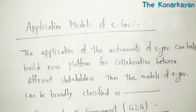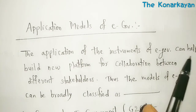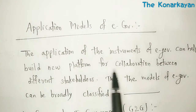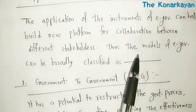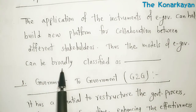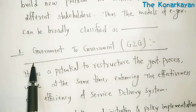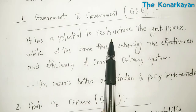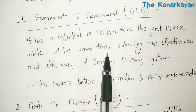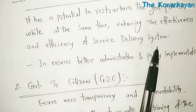The applications of the instruments of e-governance can help build new platforms for collaboration between different stakeholders. The models of e-governance can be broadly classified as follows. First is Government to Government, G2G. It has the potential to restructure government processes while at the same time enhancing the effectiveness and efficiency of the service delivery system.